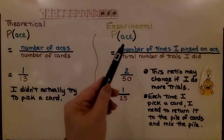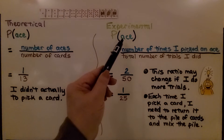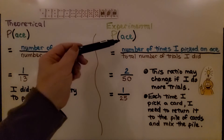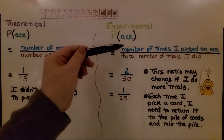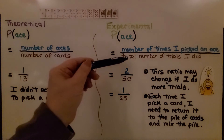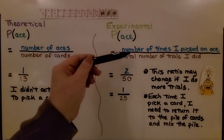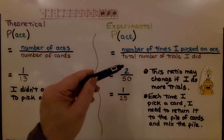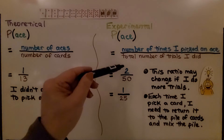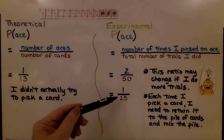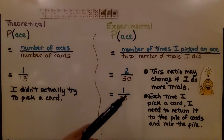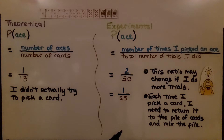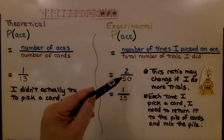For experimental probability of picking an ace, it's the ratio of the number of times I picked an ace to the total number of trials. So let's say I tried it 50 times and picked an ace two times. That would be two fiftieths, which simplifies to one twenty-fifth. This ratio may change if I do more trials — it may be different with a hundred or a thousand trials.